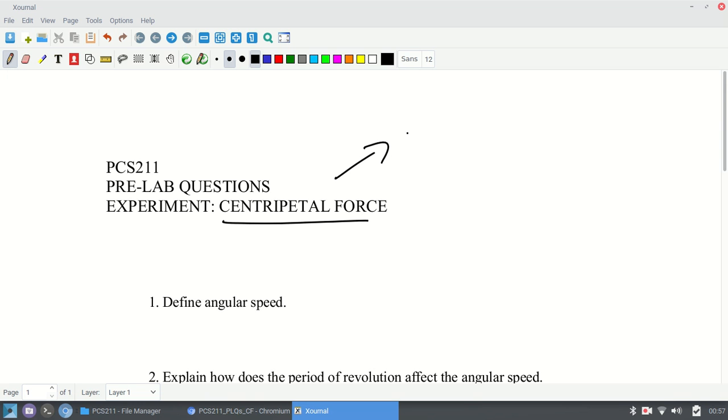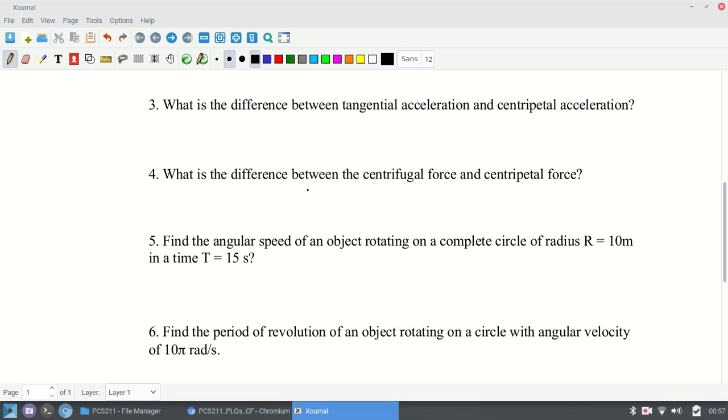So centripetal force is mv squared over r, where this is the radius of the path, and this is the speed. It's uniform circular motion, so it has a constant speed around the circle, and this is the mass of the object.